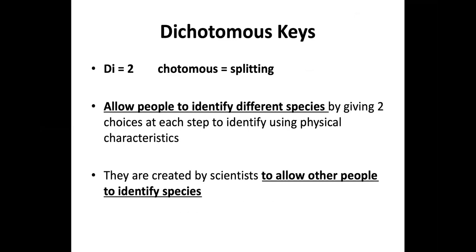Here we go — this is dichotomous keys. Super short, super sweet. "Di" means two, and dichotomous means splitting. The purpose of a dichotomous key is to allow people to identify different species by giving two choices at each step, using physical characteristics. They're created by scientists to allow other people to be able to identify a species.